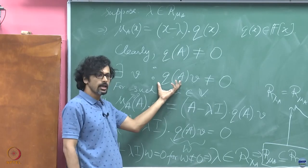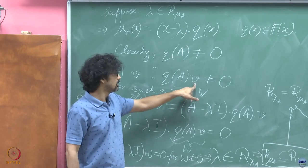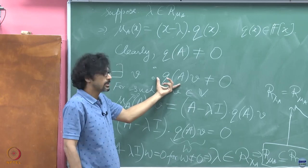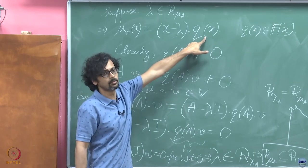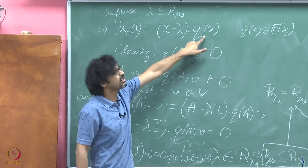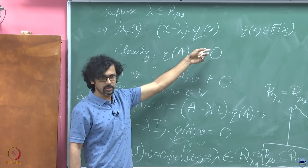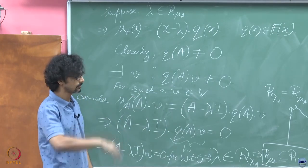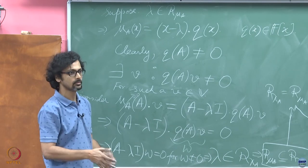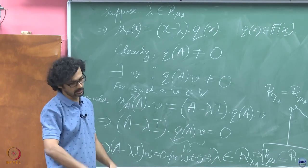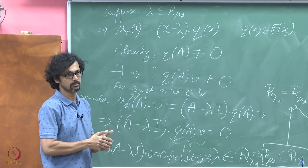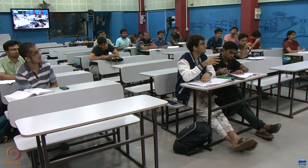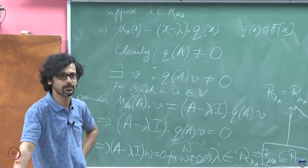If there does not exist such a V, it means q(A) acts on any vector in the vector space and takes it to zero — but only the zero operator does that. q(A) cannot be the zero operator because then q(x) would have been the minimal polynomial. But we know the degree of the minimal polynomial is one greater than q by construction. Therefore there must be at least one vector.